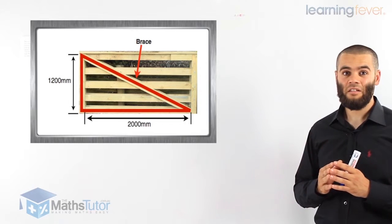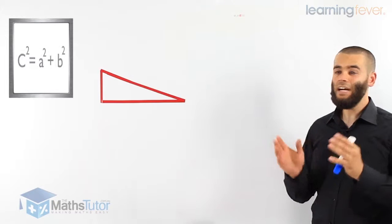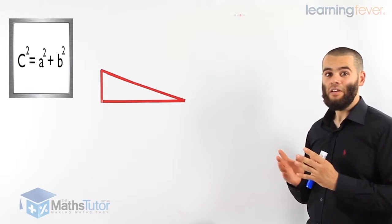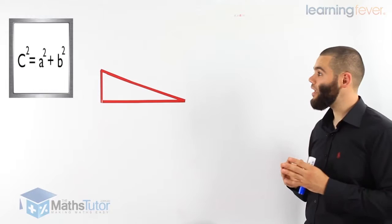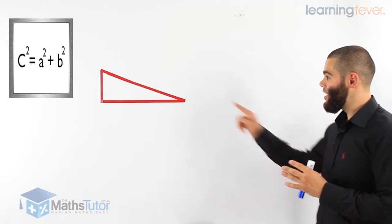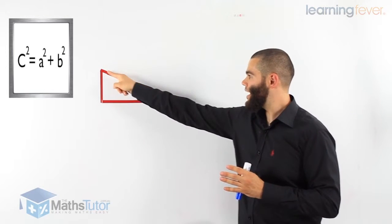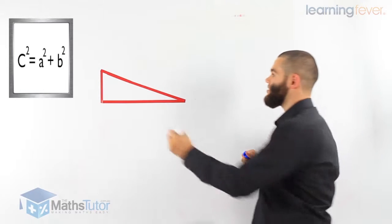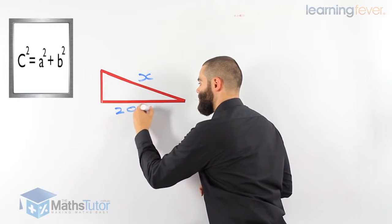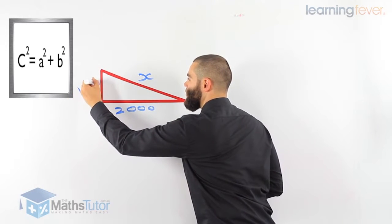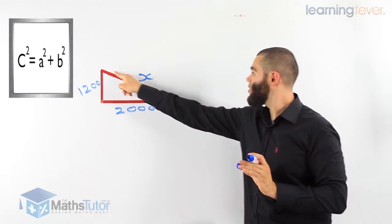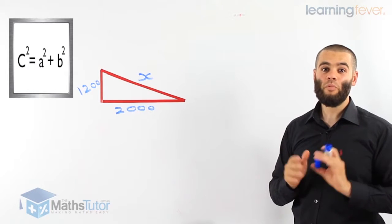Let's get started. First, we draw our diagram. We've created a right-angled triangle because the brace makes a right-angled triangle with the length and the height of the gate. We have our length, our height, and our brace — which we're going to find — and the brace is our hypotenuse. The length is 2,000 and the height is 1,200. So we can use Pythagoras to find the length of the brace, and the brace represents the hypotenuse.